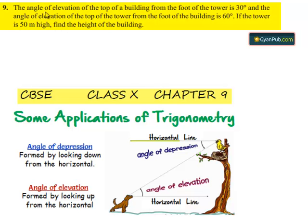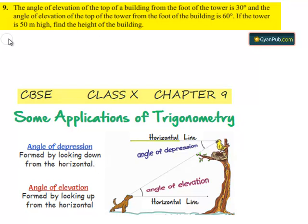Moving on to the 9th question. The angle of elevation of the top of the building from the foot of the tower is 30 degrees, and the angle of elevation of the top of the tower from the foot of the building is 60 degrees. If the tower is 50 meters high, find the height of the building.